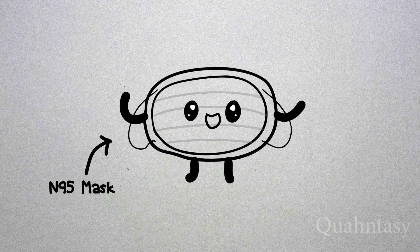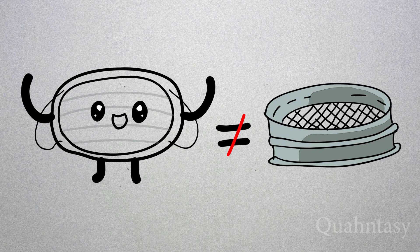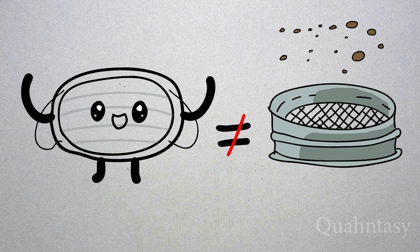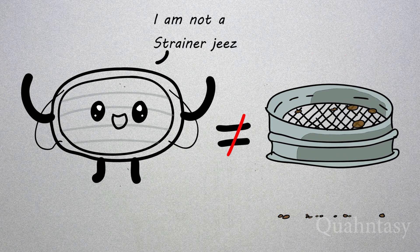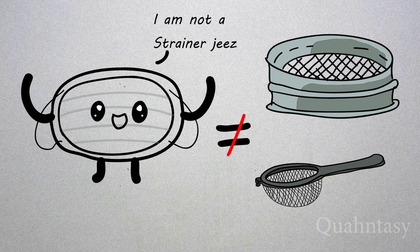A common misconception is that an N95 mask is basically a really fine strainer, a mesh of fibers with gaps too small for particles to get through. It's not like a sieve. What passes through the mask doesn't really depend on the size of gaps as in the case of a strainer.